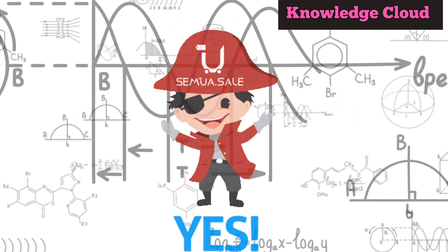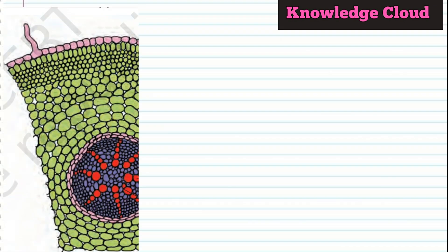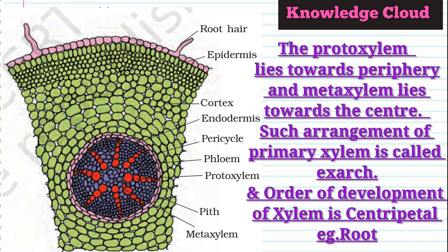Let me explain the exarch and endarch conditions in one minute. In the exarch condition, the protoxylem is on the periphery side and the metaxylem is on the inner, center side. Since protoxylem develops first and metaxylem is towards the center, the development is from the periphery towards the center. We call this centripetal development — meaning towards the center. The exarch condition is present in the roots.